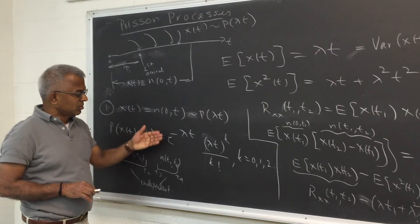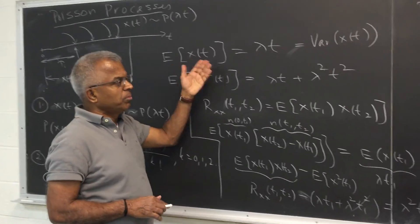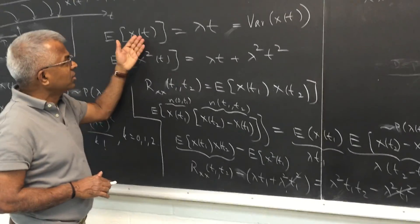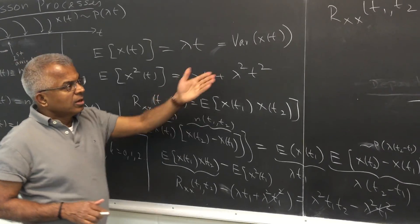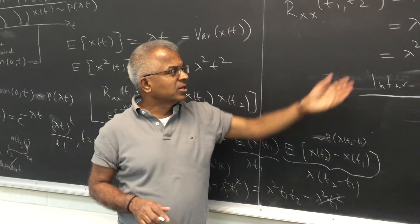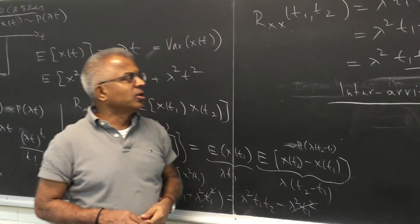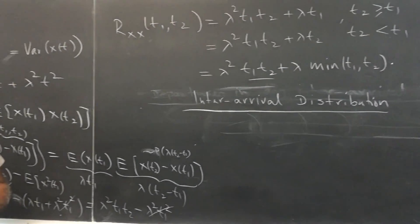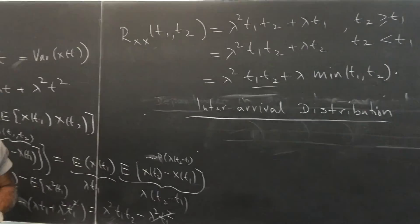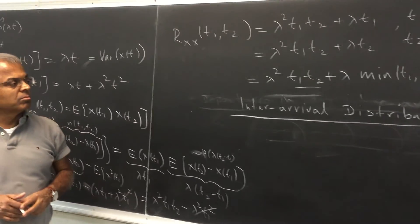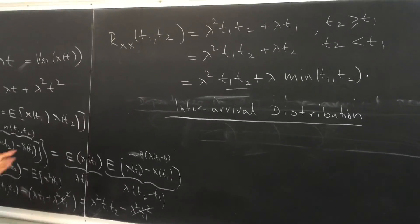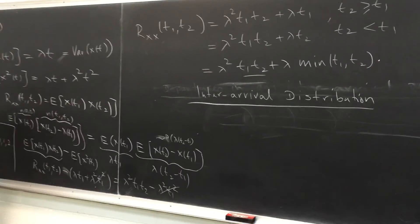We can use these two properties to derive the mean and autocorrelation function. The mean is λt and the autocorrelation function is λ²t₁t₂ plus λ times the minimum of t₁ and t₂. Clearly this is not a stationary process.